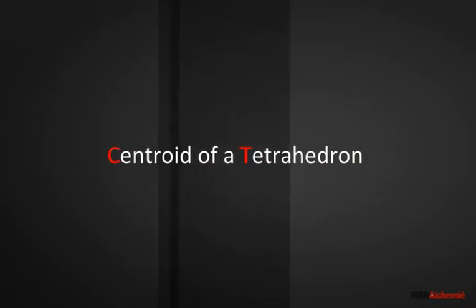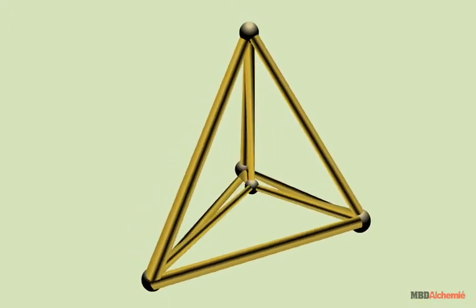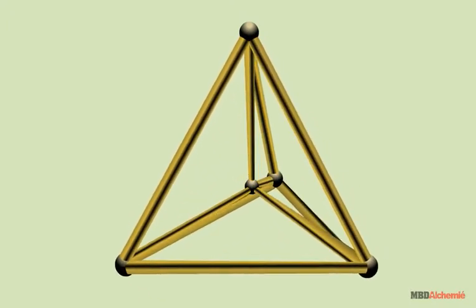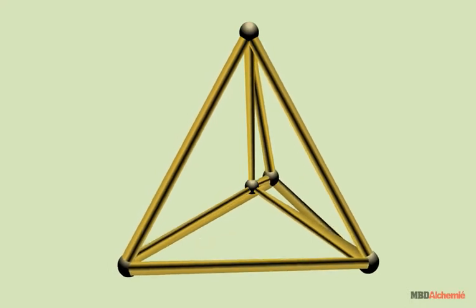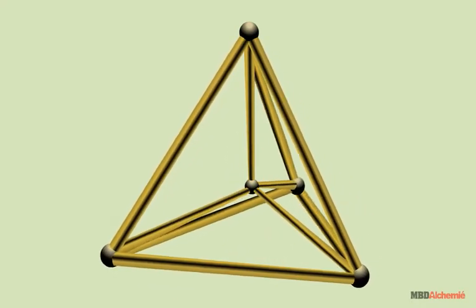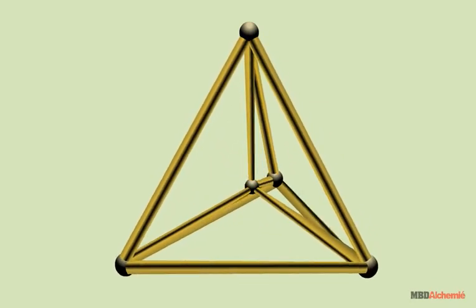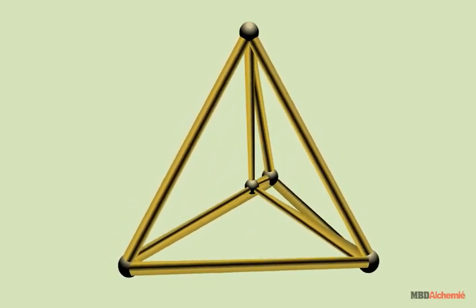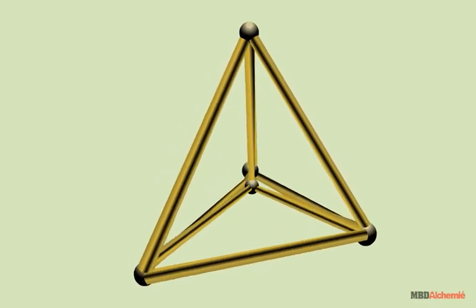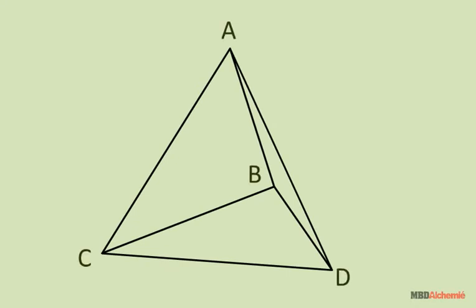Centroid of a Tetrahedron. A tetrahedron is a solid figure having triangular faces, and the point which divides the line joining any vertex to centroid of its opposite face in the ratio 3 is to 1 is the centroid of the tetrahedron, or its center of gravity. Let's find the coordinates of centroid of a tetrahedron.